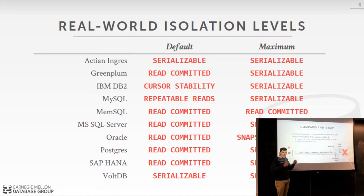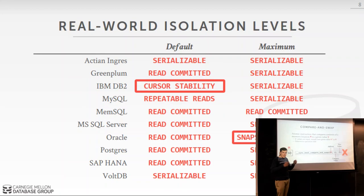Facebook runs at repeatable reads with the largest MySQL installation in the world, and for them that's fine. There are also two isolation levels not in the standard four: DB2's default is cursor stability, and Oracle's maximum isolation level is actually snapshot isolation — so when you say you want serializable in Oracle, the system gives you snapshot isolation instead.